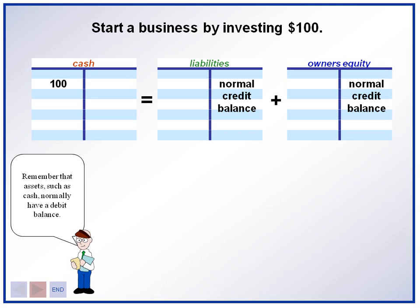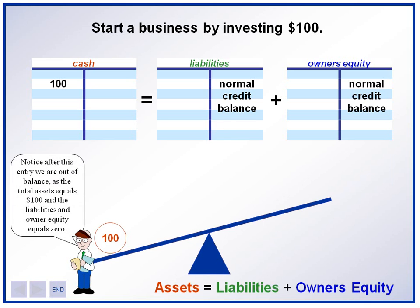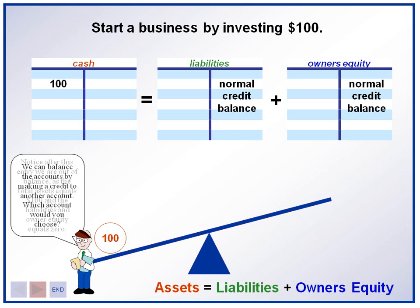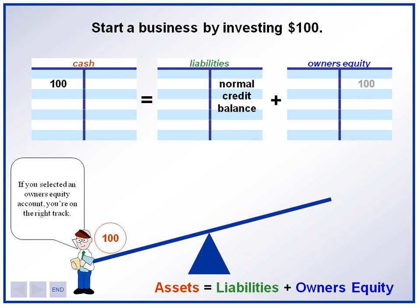Remember, assets such as cash always increase by a debit. However, our accounting entry is out of balance right now. Currently, we only have an asset account recorded. We either need to record a liability or an owner's equity in order to bring our equation back into balance. Which account do you think we should use for the second half of this transaction? Owner's equity would be the account we would use for the second half of this transaction. We will credit owner's equity for $100 to represent our share of the business.